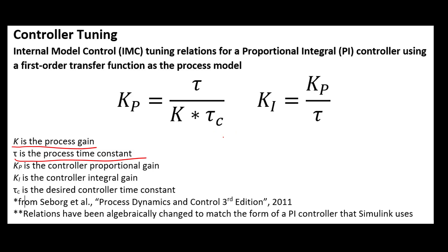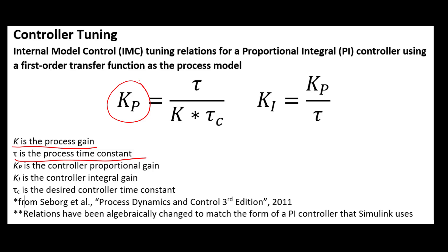If we want a less aggressive controller, we could choose tau_c on the same order of magnitude as the process time constant, or even larger. The parameters tau and k are obtained from data and measurements of the system — they are not tunable. Tau_c is what we pick, and it allows us to calculate kp. The integral gain ki is then calculated as kp divided by the process time constant.